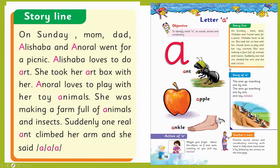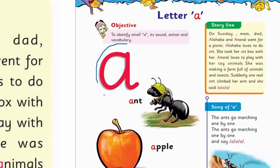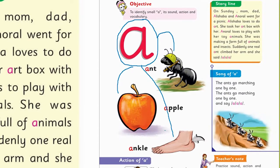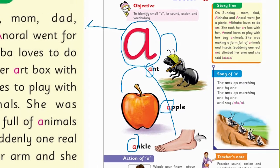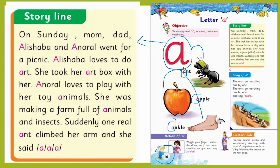अब हम वापिस चलते हैं बुक के उस पेज पे जहाँ पे हमारा ये sound नज़र आ रहा है। Ant, apple, ankle. इसी 'a' के साथ जो स्टोरी हमने सुनी थी उसमें भी 'a' बहुत सारी जगहों पे आता है। दुबारा से पढ़ें: On Sunday, mom, dad, Alishba and Anoral went for a picnic. a, a, a.